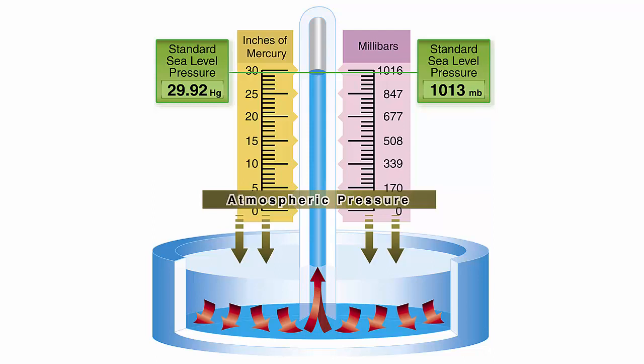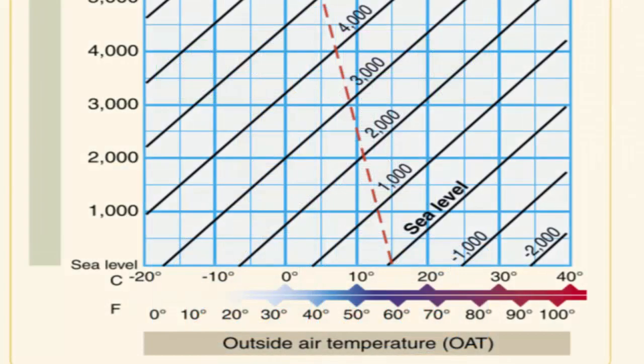Since air is a gas, it can be compressed or expanded. When air is compressed, a greater amount of air can occupy a given space. When pressure is decreased, the air expands and occupies a greater space. At a lower pressure, the original column of air contains a smaller mass of air. The density is decreased because density is directly proportional to the pressure. If the pressure is doubled, the density is doubled. If the pressure is lowered, the density is lowered. This statement is true only at a constant temperature.